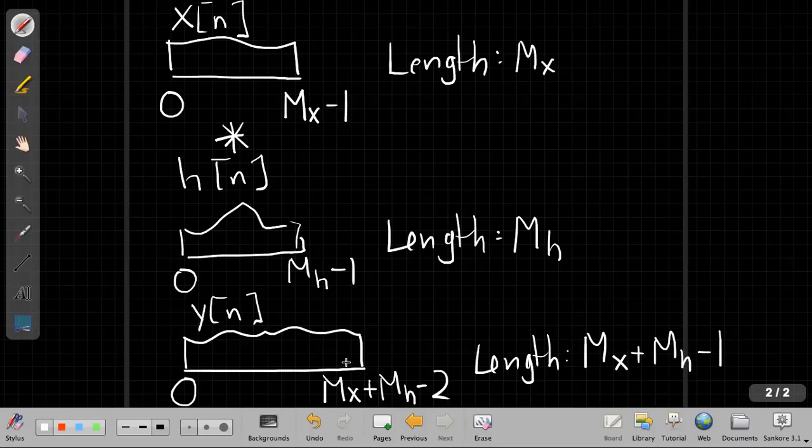To find the output y[n], I add starting points to get the starting point, so 0 plus 0 means this starts at 0. The last point is m_x plus m_h minus 2, giving me a length of m_x plus m_h minus 1. So I need that the DFT size N needs to be greater than or equal to m_x plus m_h minus 1. I'm planning ahead to avoid aliasing in the time domain.